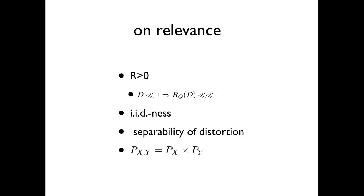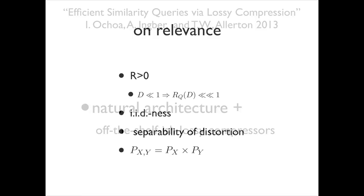Another point on IIDness and inseparability of distortion: we're now talking with people from Yahoo who are giving us data to work on. In many cases you work in the feature domain. Even though the original data may not be IID and the similarity distortion in the original domain may not be naturally separable, if you do your feature extraction right, then in the feature domain, IIDness and separability of distortion — using L2 or L1 as a distortion criterion — is very natural.